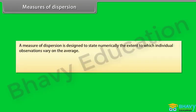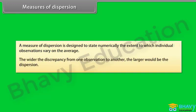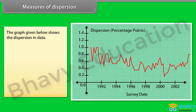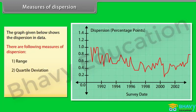Measures of Dispersion. A measure of dispersion is designed to state numerically the extent to which individual observations vary on the average. The wider the discrepancy from one observation to another, the larger would be the dispersion. There are following measures of dispersion: Range, Quartile deviation, Mean deviation, and Standard deviation.